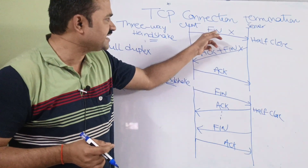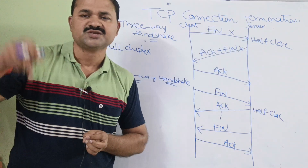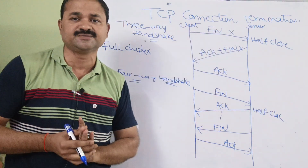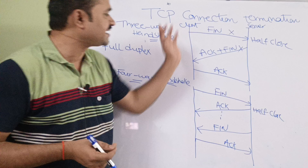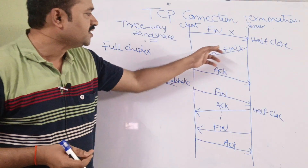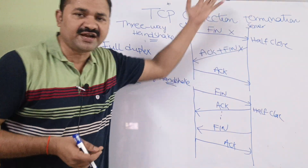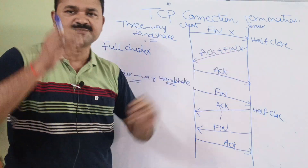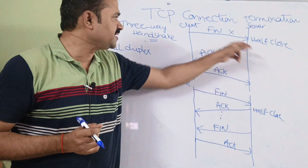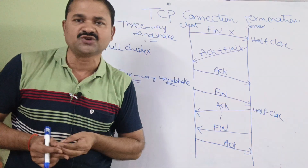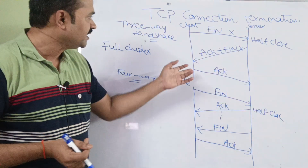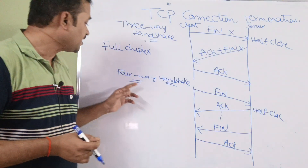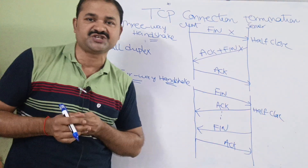This is called a three-way handshake. First, the client sends a FIN segment to the server, specifying that the connection from client to server is closed. Next, the server transmits a FIN segment along with acknowledgement for the previous FIN segment, specifying that the connection from server to client is closed. Finally, the client responds with an acknowledgement segment.